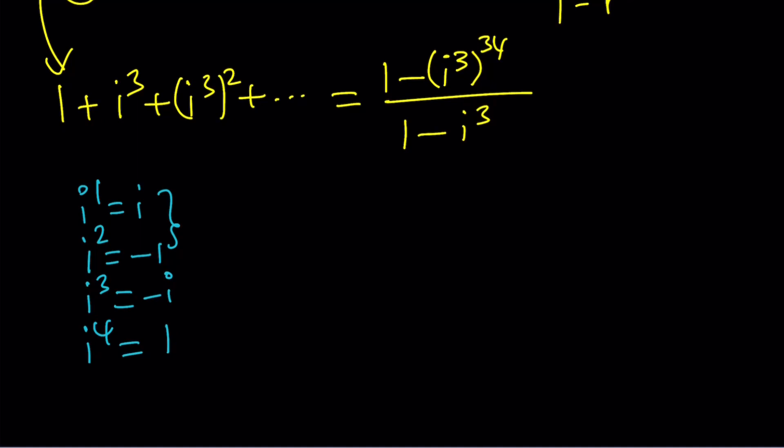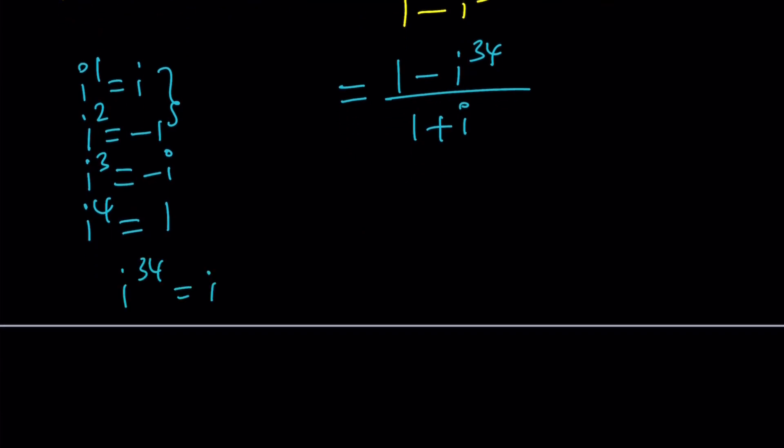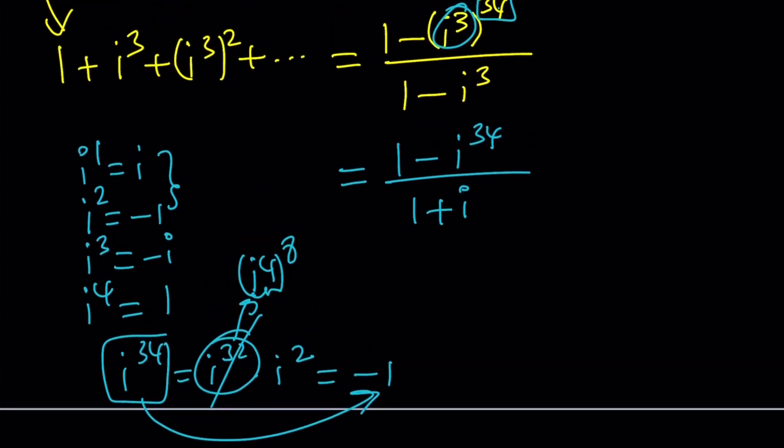Either you can multiply 3 times 34 and evaluate the power, or you just replace i cubed with negative i. This is an even number, so it's still going to be 1 minus i to the power 34, divided by 1 minus i cubed. i cubed is negative i, so we can write this as 1 plus i. What about 34? Think about i to the power 34 in mod 4. i to the 34 is basically i to the power 32 times i to the second, and since i to the 32 is 1, i squared is negative 1. So all you have to do is look at the exponent from a mod 4 perspective - divide the exponent by 4 and look at the remainder.